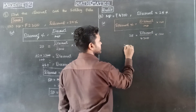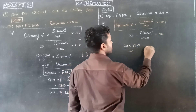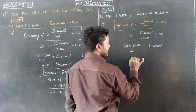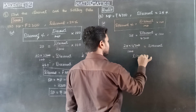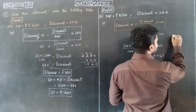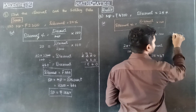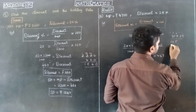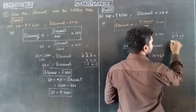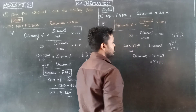So, rearranging — 25 into 4700 divided by 100 equals discount. That is 25 into 47, which gives us ₹1175. So the discount is ₹1175.